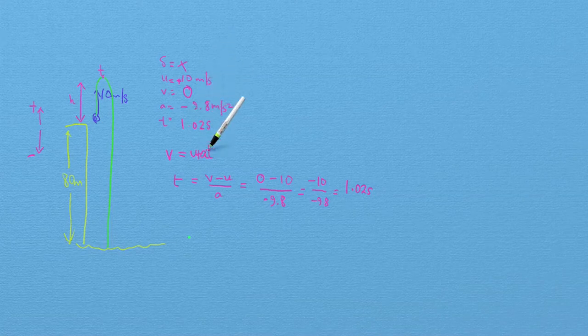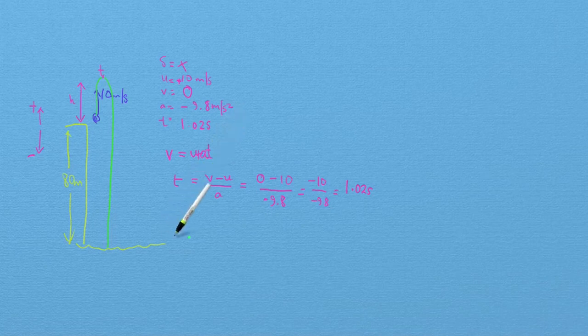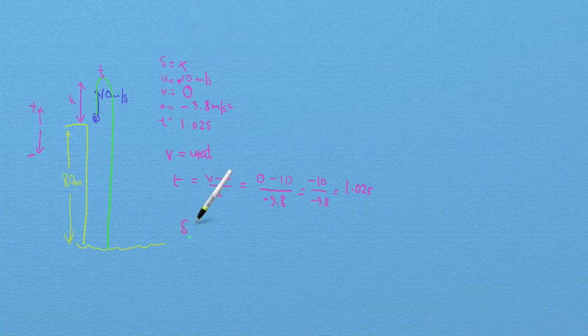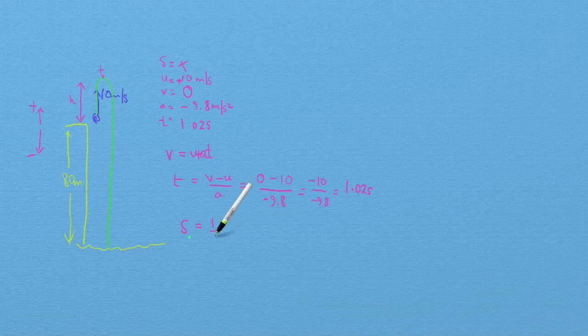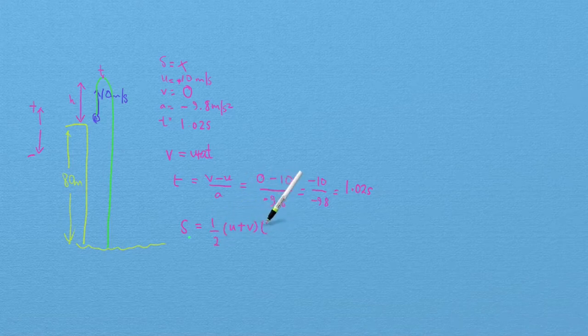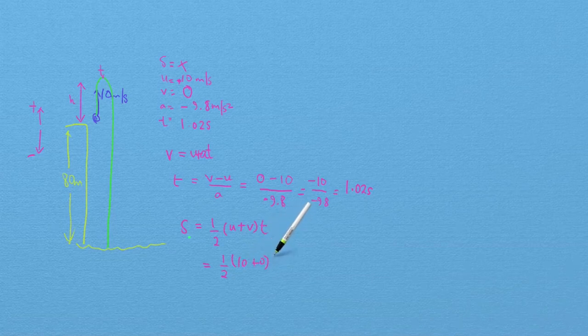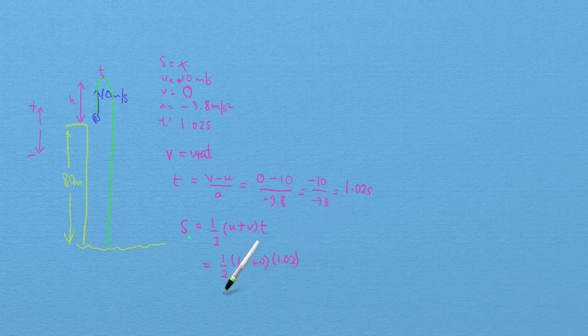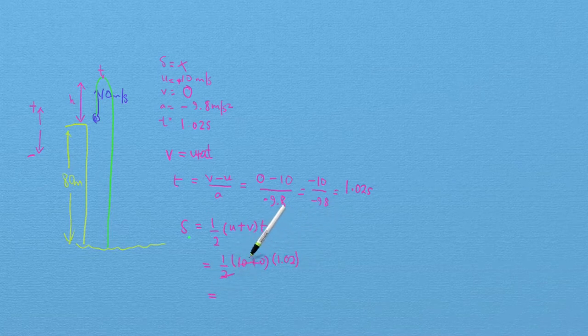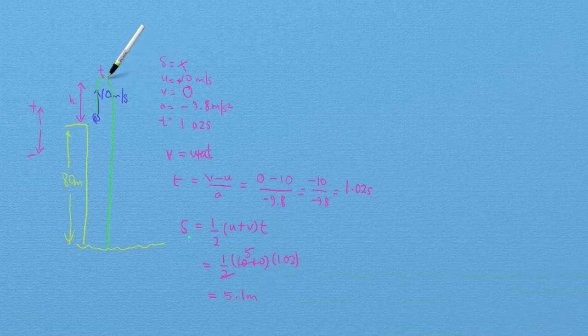And now that I have four variables out of the five, I can use any equation that contains displacement. I'm going to use the second equation s equals ut plus half at squared, which will give me half times 10 plus 0 times 1.02, which will be 5.1 meters. So that's how high it gets up to.